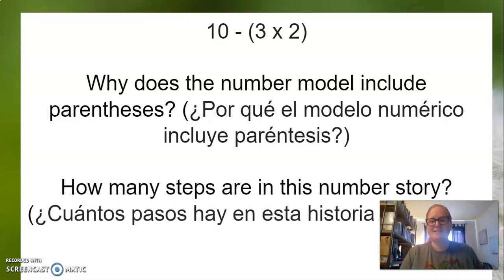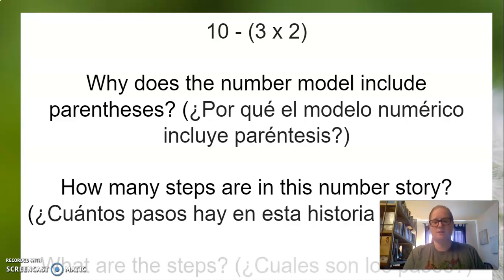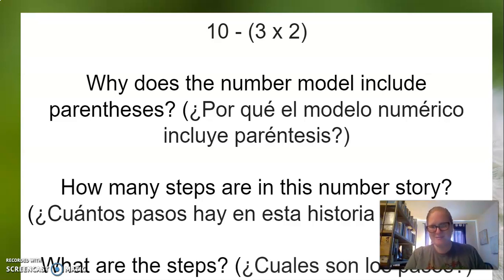So how many steps are in this number story? I'll give you a moment to think about it. The answer is two, okay? This is a two-step number story. Three times two, you do first. That's the first step. Then the second step is taking that and ten minus that answer to get your result. First you've got to do three times two, get that answer. Then you do ten minus your answer, and that's how you get your result.